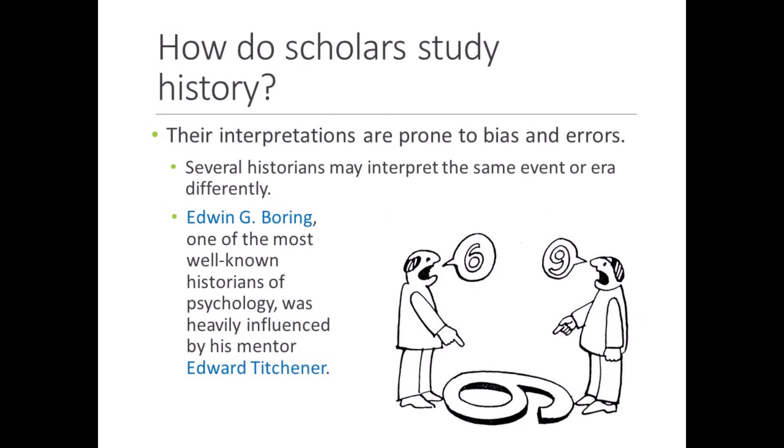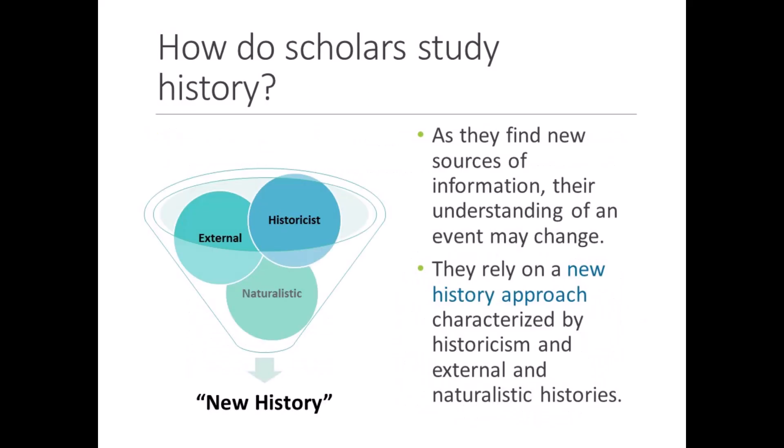A second limitation is that scholars shape the histories they write. Their understanding of past events is based on the information available to them and their perspective. Their personal biases, perceptual biases, and attributional errors impact their ideas and articulation of those ideas. For example, Edwin G. Boring's version of history was filtered through his mentor, Edward B. Titchener, the father of structuralism. Titchener preferred experimental psychology over applied psychology, and he influenced Boring to basically ignore the contributions of the latter in his famous history book. Another example is that one of Sigmund Freud's biographers downplayed the extent of his cocaine use to help protect his reputation. Different historians may interpret the same historical event or contribution differently, and it can be challenging for everyday people to know which historians do their homework. Fortunately, historians recognize the limitations of their methods and do their best to overcome them. As they find new sources and gather more information, their initial understanding of an event may evolve, slightly or drastically.